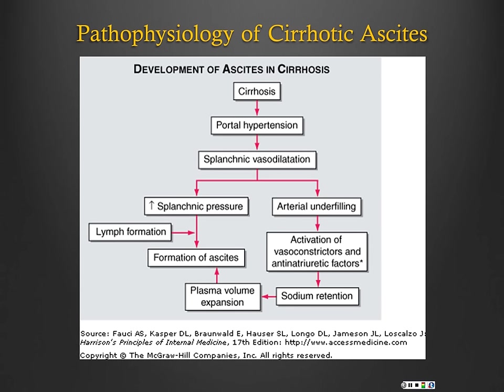The real player here is the development of portal hypertension. As you go along the spectrum of liver disease — inflammation, fibrosis, then cirrhosis — you eventually develop portal hypertension. The side effect is splanchnic vasodilation, where blood pools in the splanchnic system. This causes two things: increased splanchnic pressure, and because of that, increased lymphatic pressure and lymph formation, which directly contributes to ascites.